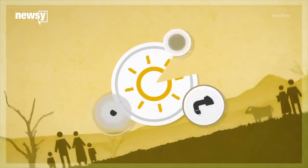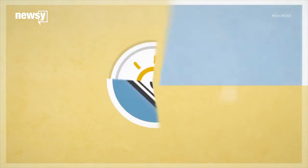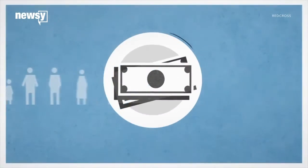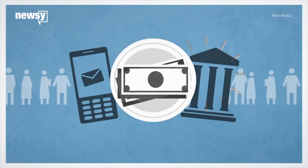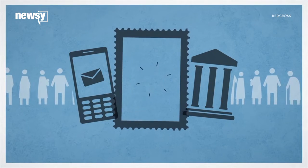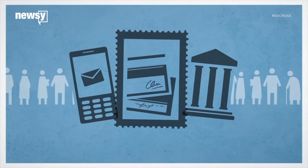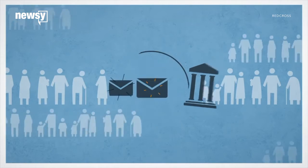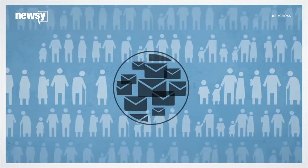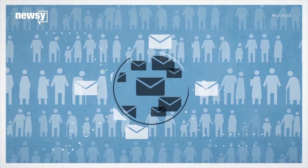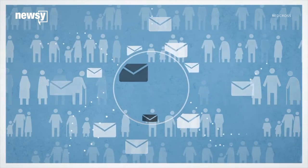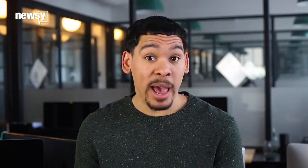According to the Red Cross, cash transfers, in lieu of providing physical goods or services, can be especially efficient after natural disasters. Beneficiaries do not need to stand in long queues to be given whatever good someone else decides they need.